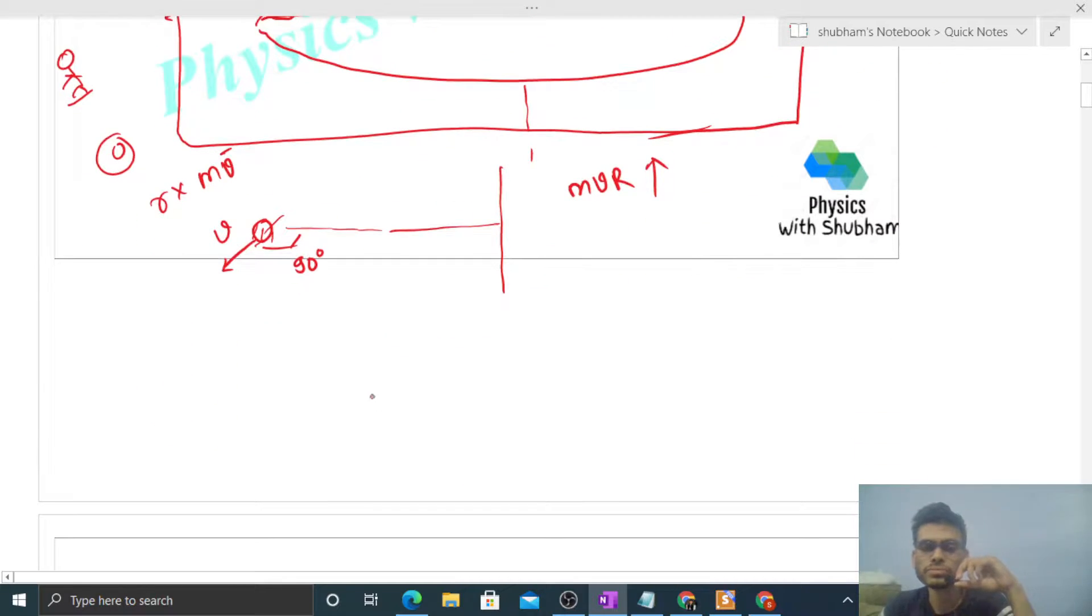And this platform, in this platform there's a kid, the kid and platform that remains, they will rotate in this direction. So its angular momentum will be in the downward direction. You can feel it, this angular momentum that is acting is downward.